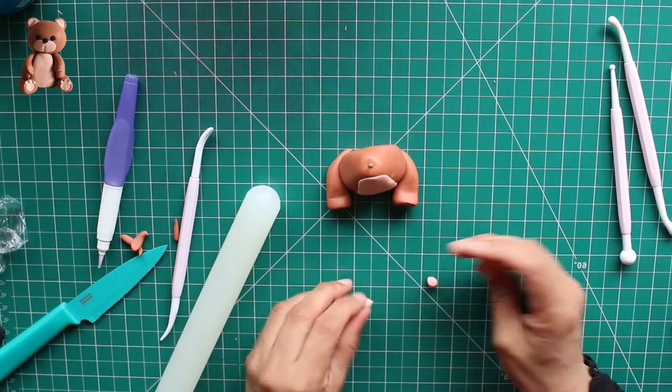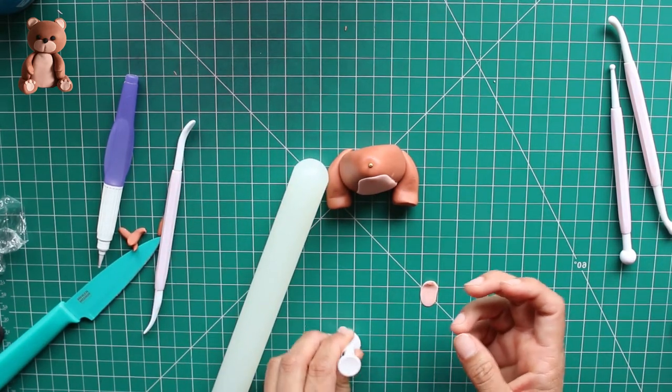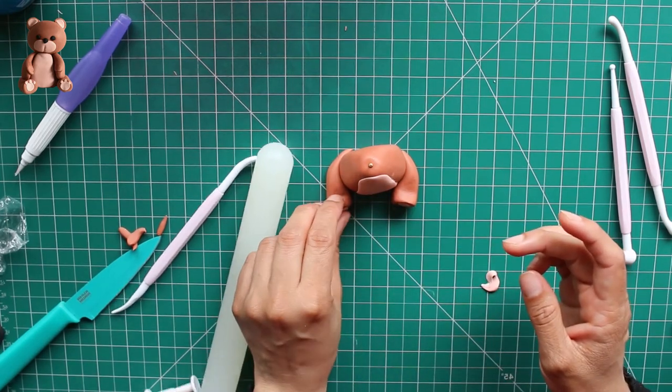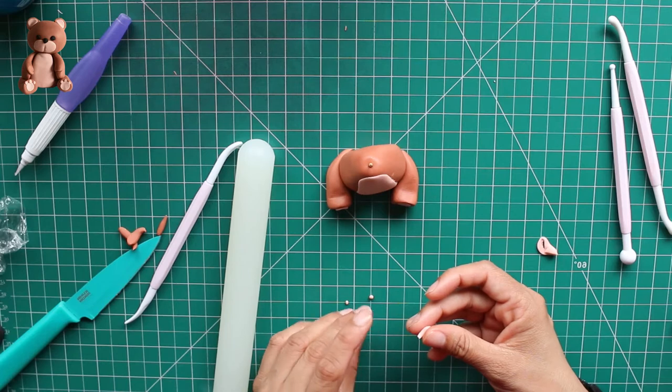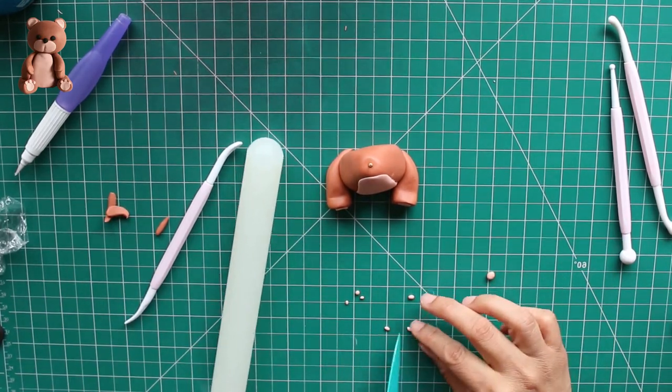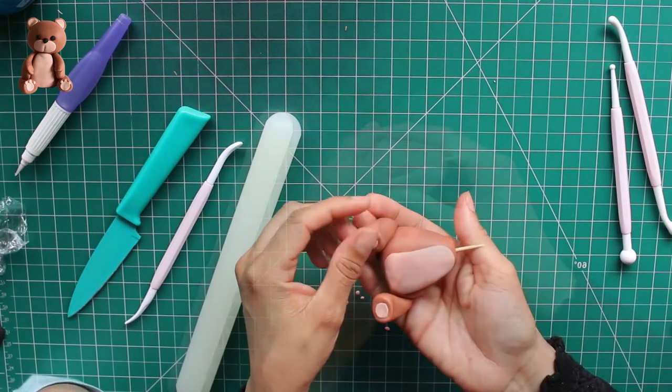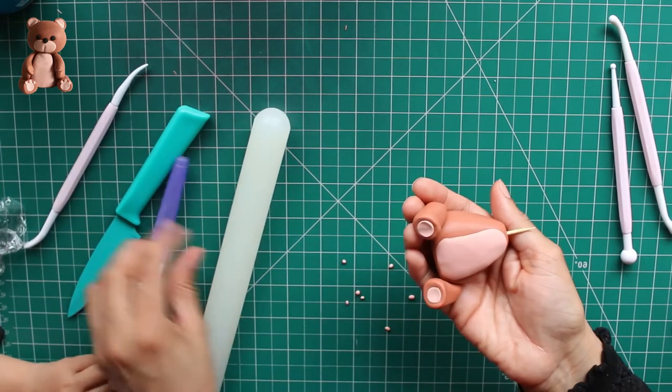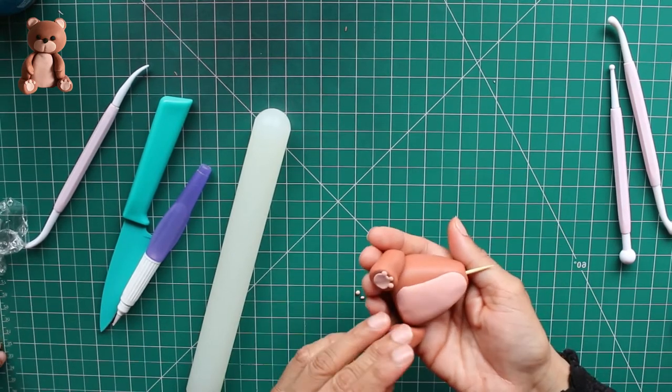Now to give some details on the paws, just roll out some skin tone gum paste and just cut two circles and place them on the paws. And we'll need six tiny tiny little balls and they will be used as toes. So three on each side.